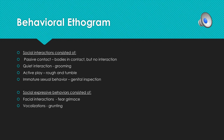Observers used a behavioral ethogram to track all social interactions and expressive behaviors observed during sessions between pairs of monkeys. The social interaction category was broken down into four sections: passive contact, quiet interaction, active play, and immature sexual behavior — all of which are exactly what they sound like. For example, quiet interaction involved grooming one another without any vocalizations or communication.